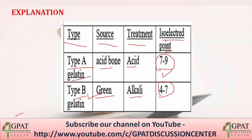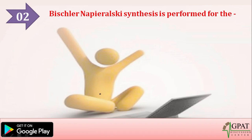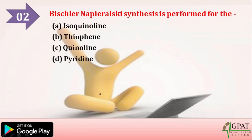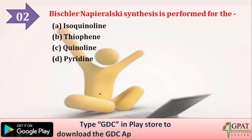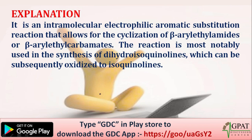Moving on to the next question: Bischler-Napieralski synthesis is performed for — option A isocoumarinone, option B thiophene, option C quinoline, option D pyridine. The correct answer is that Bischler-Napieralski synthesis is performed for the synthesis of isocoumarinone.